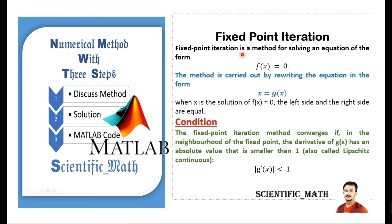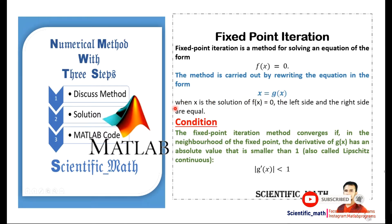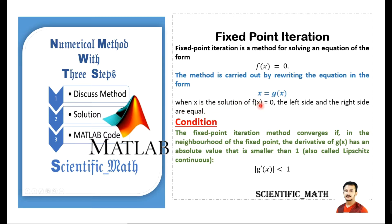Fixed point iteration is a method for solving an equation of the form f(x) = 0. The method is carried out by rewriting the equation in the form x = g(x). When x is the solution of f(x) = 0, the left side and right side are equal — if x is the root of this function, substituting it into the function gives zero.